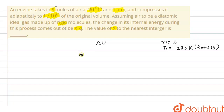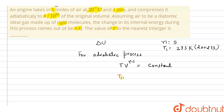For an adiabatic process, we apply the relation T·V^(γ-1) = constant. So we can write T1·V1^(γ-1) = T2·V2^(γ-1). Since the gas is diatomic, gamma equals 7/5 for a diatomic ideal gas.